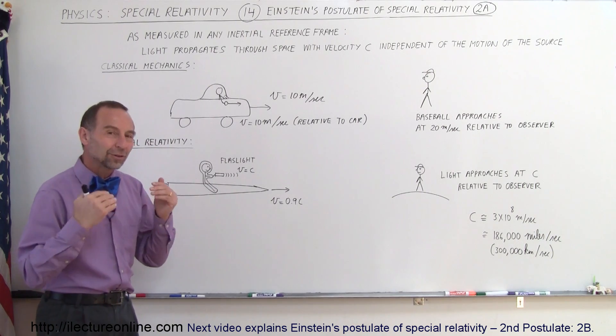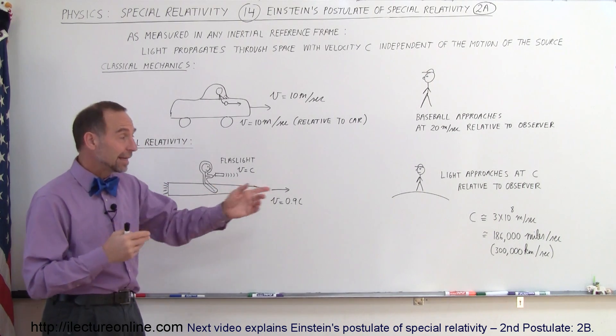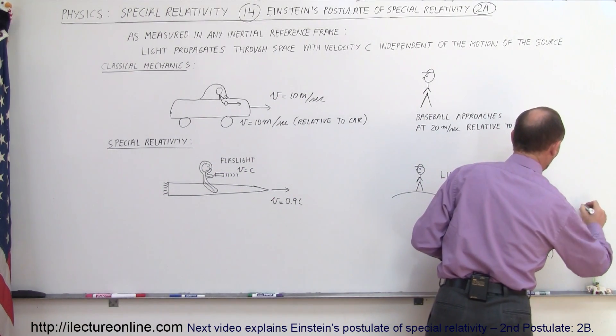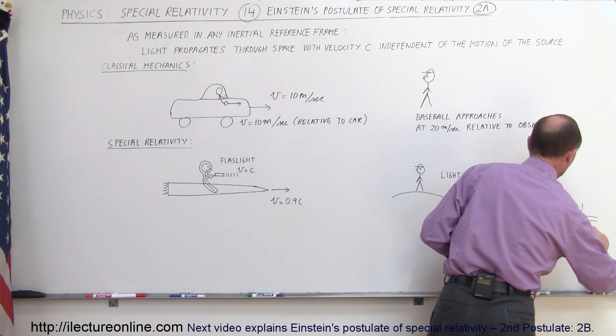Just like Maxwell calculated that speed to be equal to that, and the speed of light according to Maxwell was determined to be equal to 1 over the square root of the permeability and the permittivity of free space.